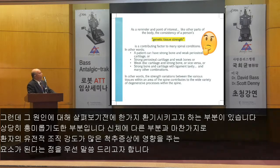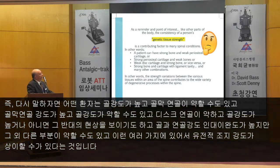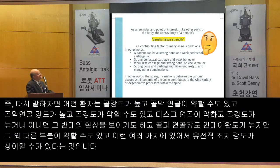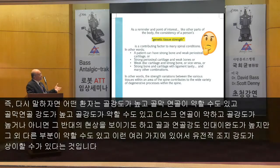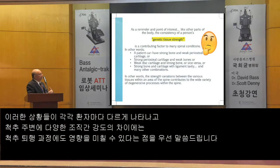As a reminder and point of interest, like other parts of the body, the consistency of a person's genetic tissue strength is a contributing factor to many spinal conditions. A patient can have strong bone and weak cartilage, or strong cartilage and weak bones, or weak disc cartilage and strong bone, or strong bone and cartilage with ligament laxity, and many other combinations. The strength variations between the various tissues within the spine contribute to a wide variety of degenerative processes.